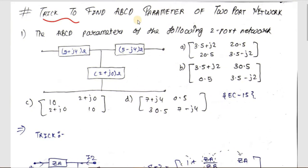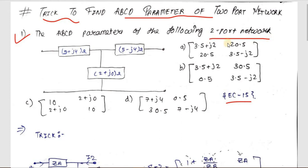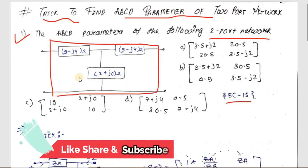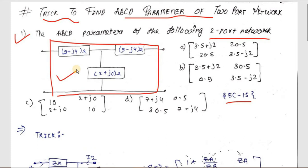Hello friends, today we are going to see the trick to find ABCD parameters of a two-port network. Without wasting time, let's start with the very first sum. This is from EC 2015. The question asks for the ABCD parameter of the following two-port network, which is a T-network.